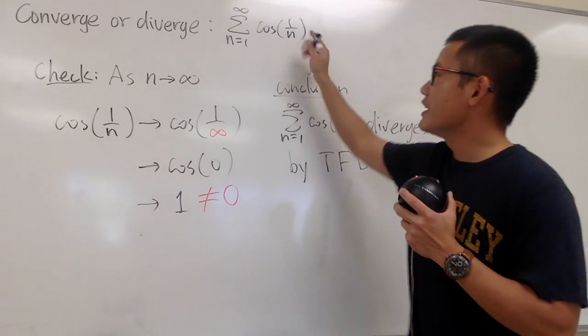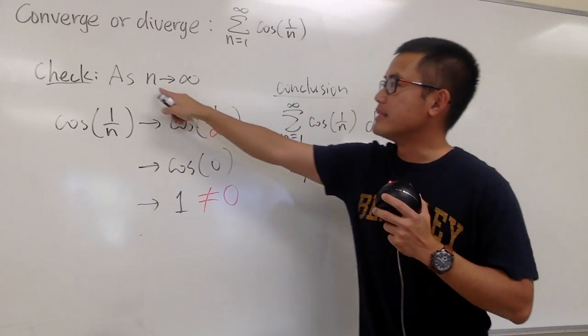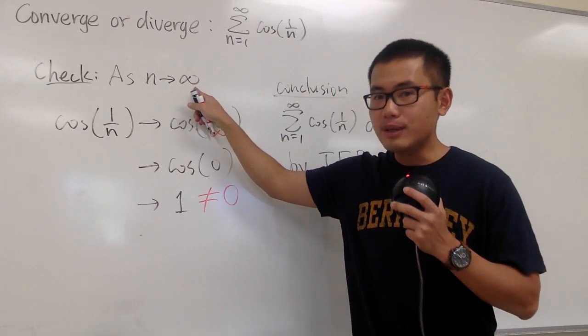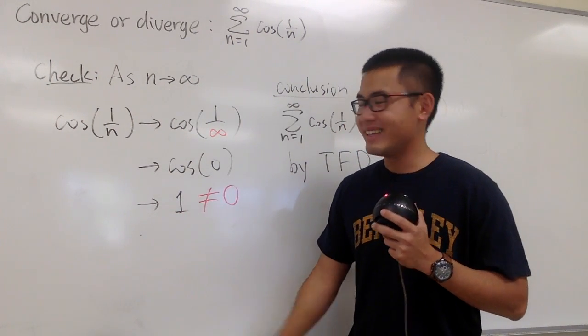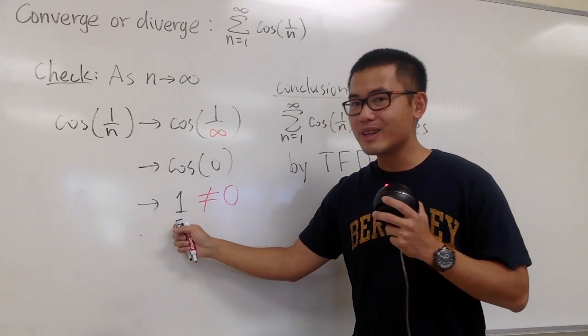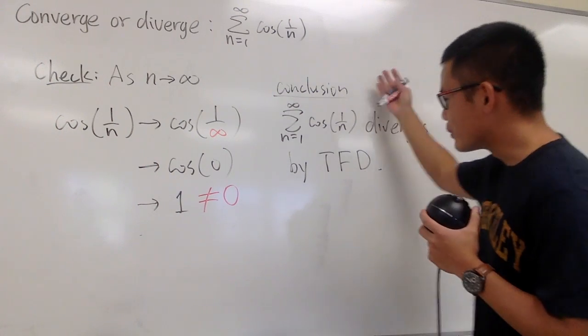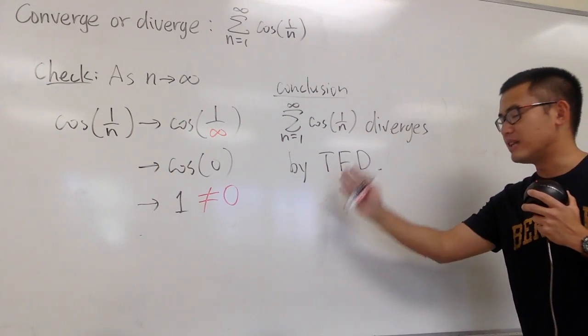Always, always check the limit of this expression as n goes to infinity. As long as we don't get 0, we can draw a conclusion right away. Earlier, we got 1, which is not 0. We can draw a conclusion. We can say it's the test for divergence.